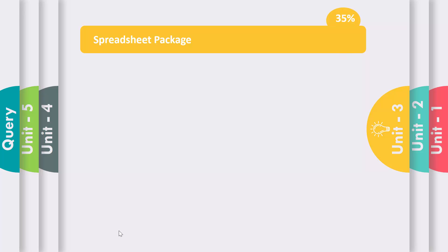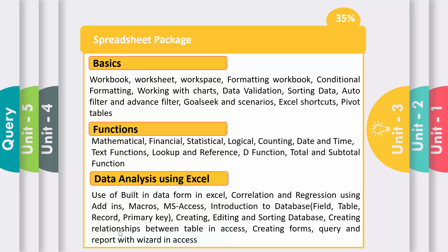Remember, 35% — this unit has the highest percentage. This unit contains basics of Excel like what is a workbook, what is a worksheet, how to open a worksheet, what is workspace, how to format a workbook, conditional formatting, working with all types of charts, how to validate data, how to sort data, auto filter, advanced filter, goal seek, scenarios, all Excel shortcuts, and pivot tables.